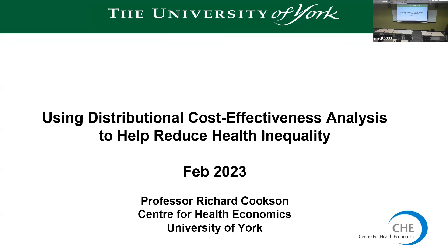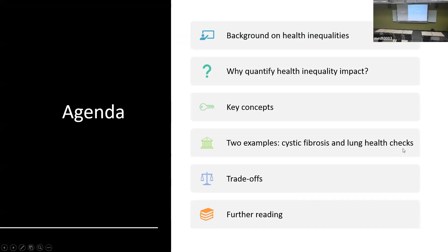I've got a special clicker. That's brilliant. Singapore has got technology. In York, we're still using the whiteboards. So here's the overview of the talk: a little bit of background on why we're trying to quantify the impact on health inequality — that's the big new thing — and then some concepts, some examples, and some further reading at the end.